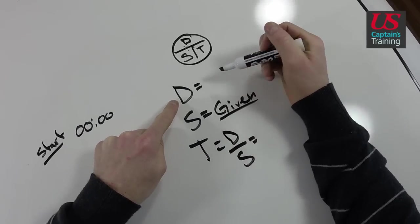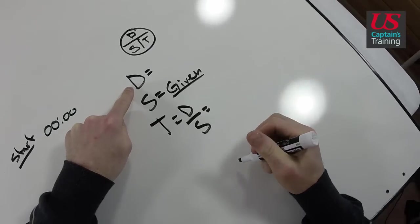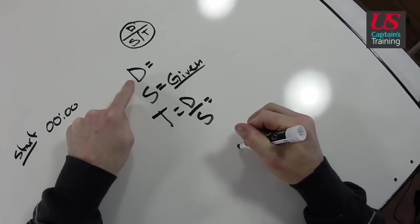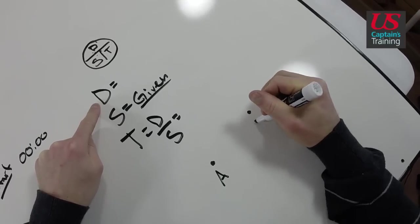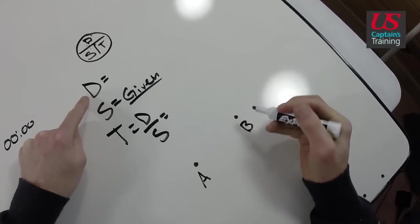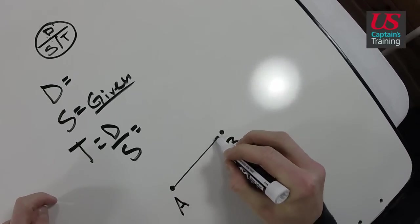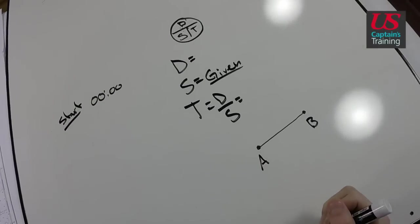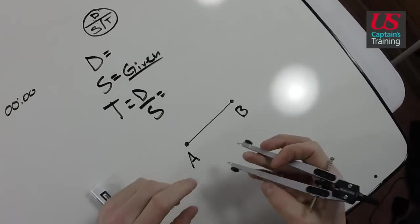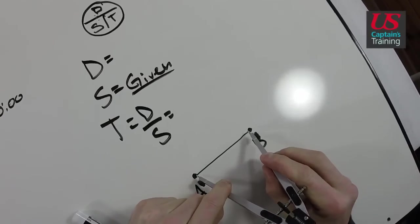Now we need to find our distance. In the problem, you'll be given the location of point A, where you're leaving from, and the location of point B, where you are going to arrive. Draw a line between those two, and then measure the distance of that line.